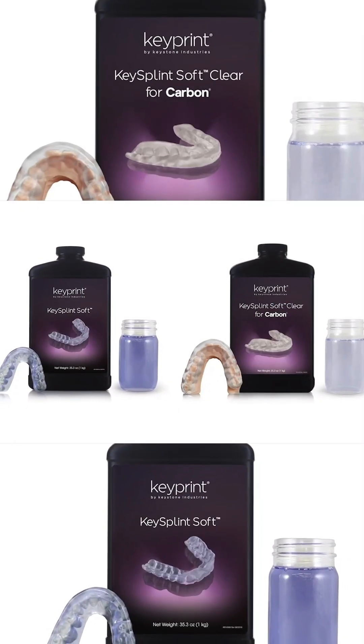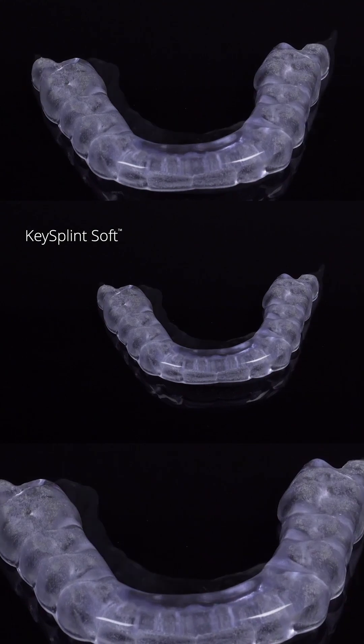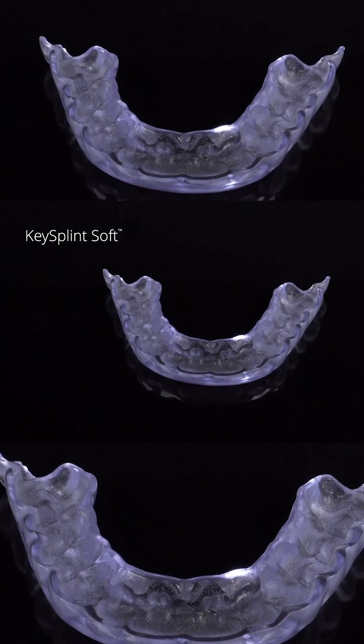Keystone offers two shades of our splint material. KeySplintSoft is an open source version with a slight violet tint and is validated in a growing number of DLP printers.